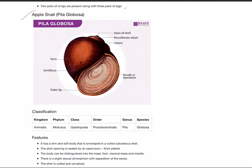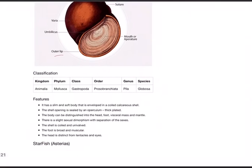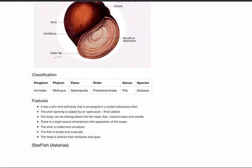Next animal: Pila globosa, apple snail. Draw the diagram showing mouth or aperture, suture, apex of shell, penultimate whorl, varix, umbilicus, and outer lip. Classification: Kingdom Animalia, Phylum Mollusca, Class Gastropoda, Order Prosobranchiata, Genus Pila, Species globosa. Features: it has a slim and soft body that is enveloped in a coiled calcareous shell.